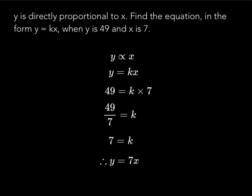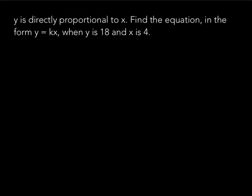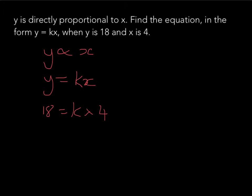Hopefully at this point you're finding this quite straightforward. However, there is a next step that gets a tiny bit trickier. Here's a question that looks exactly the same as before, so the steps are exactly the same. We've got y is directly proportional to x, so y equals kx. Substituting in: 18 equals k times 4. This is where the question differs — 18 doesn't divide by 4 neatly.